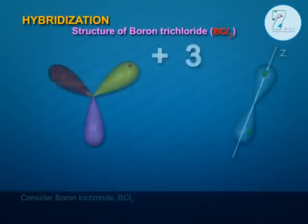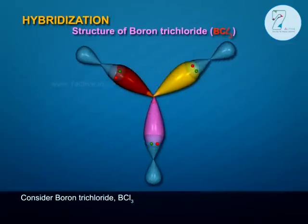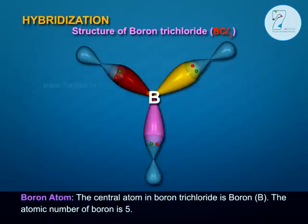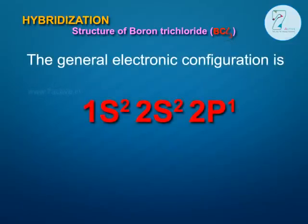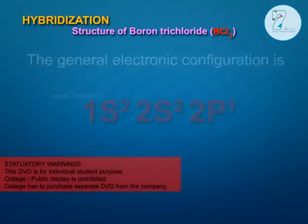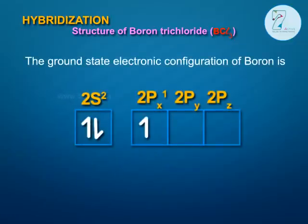Example: Consider Boron Trichloride, BCl3. The central atom is Boron. The atomic number of Boron is 5. The general electronic configuration is 1s2, 2s2, 2p1, which is the ground state electronic configuration of Boron.